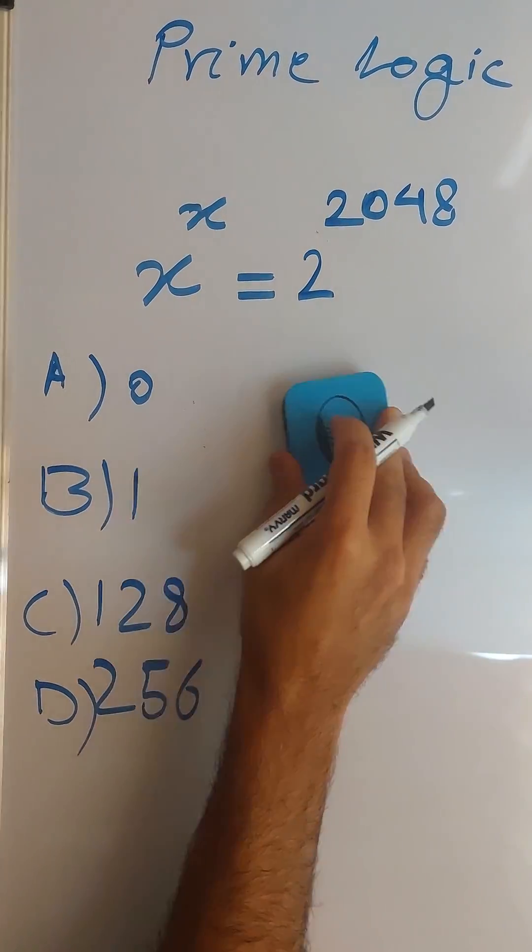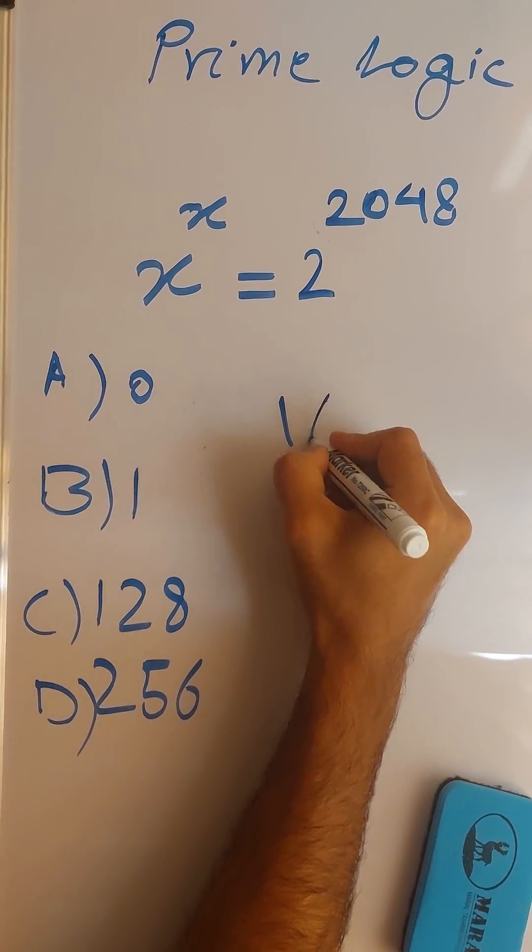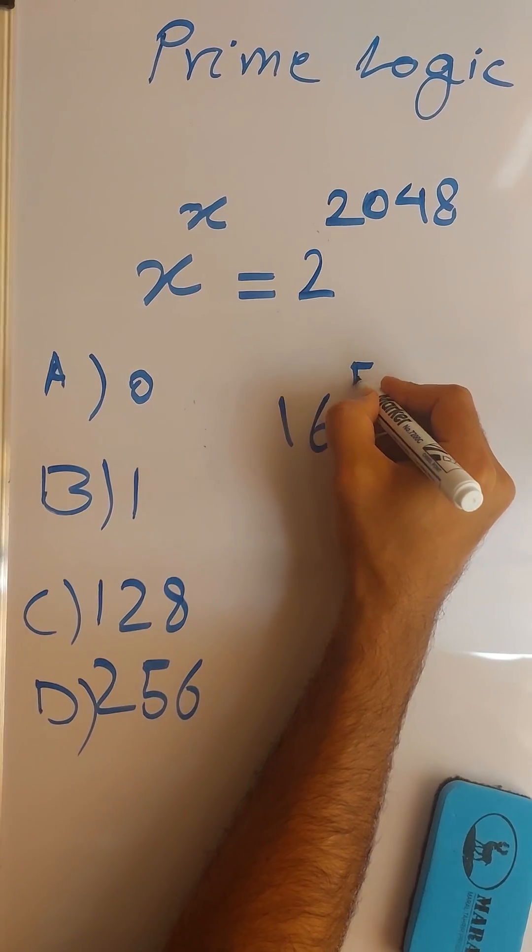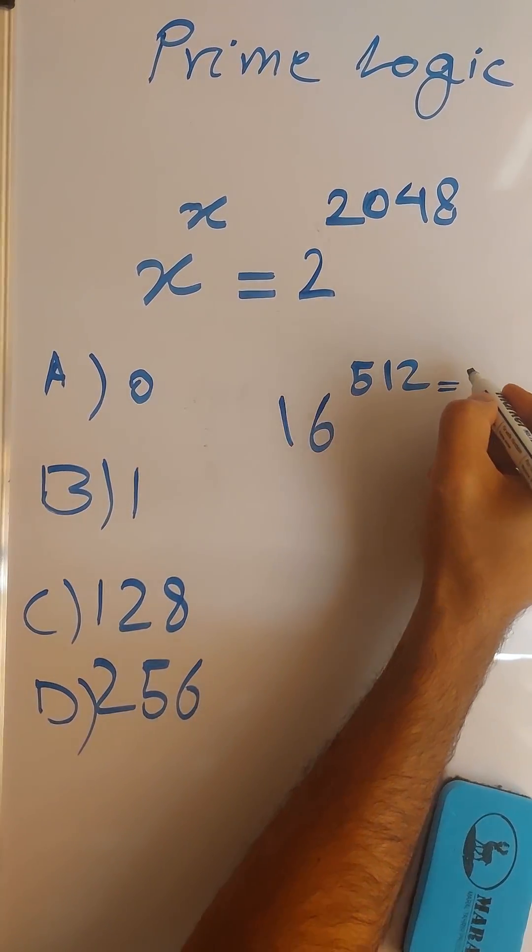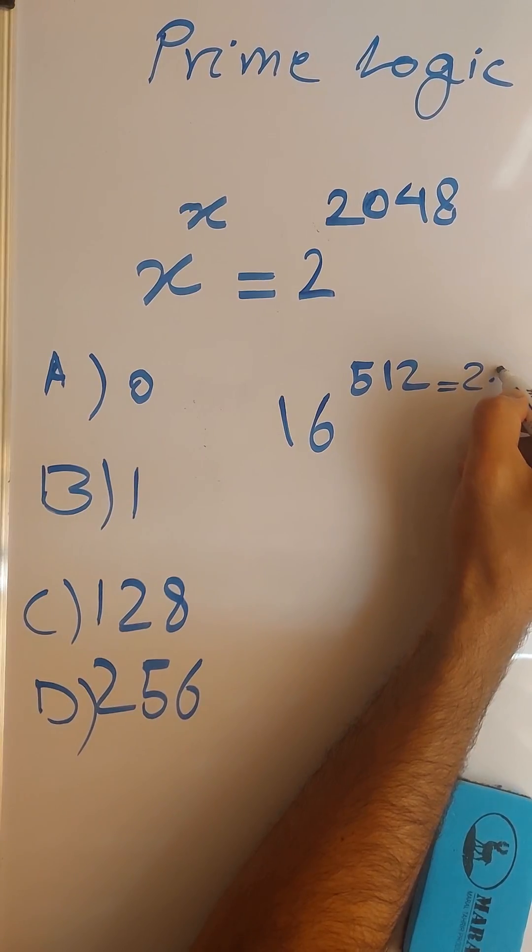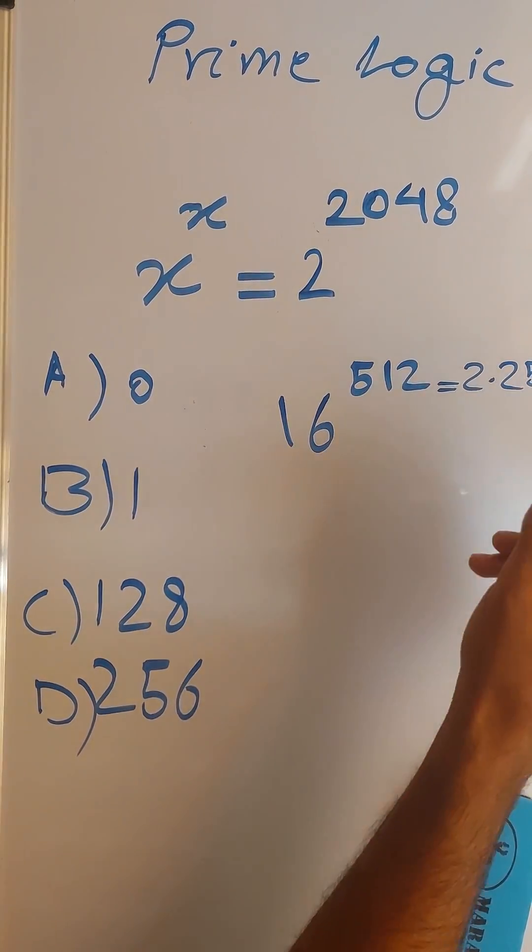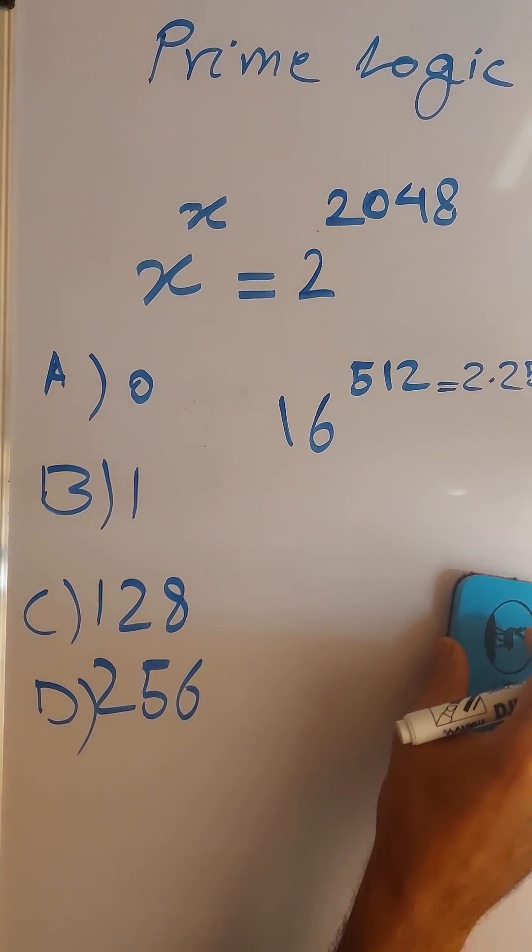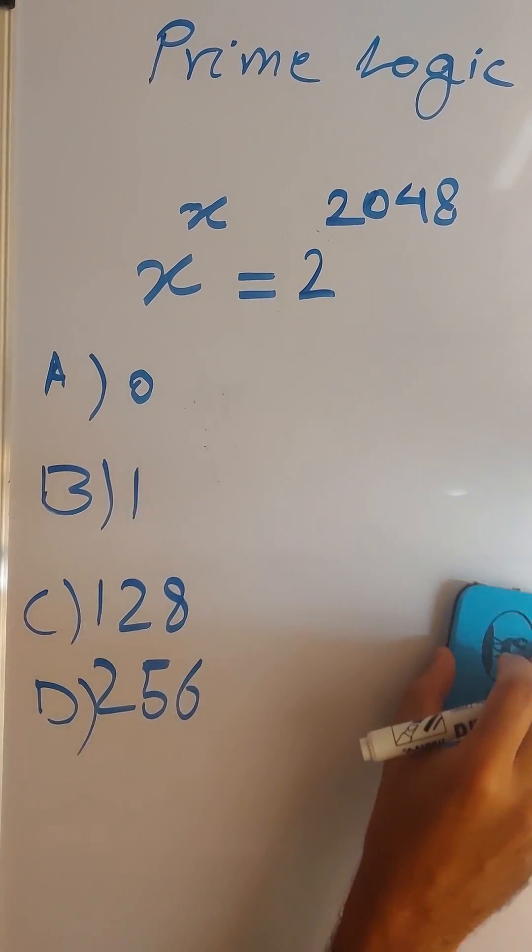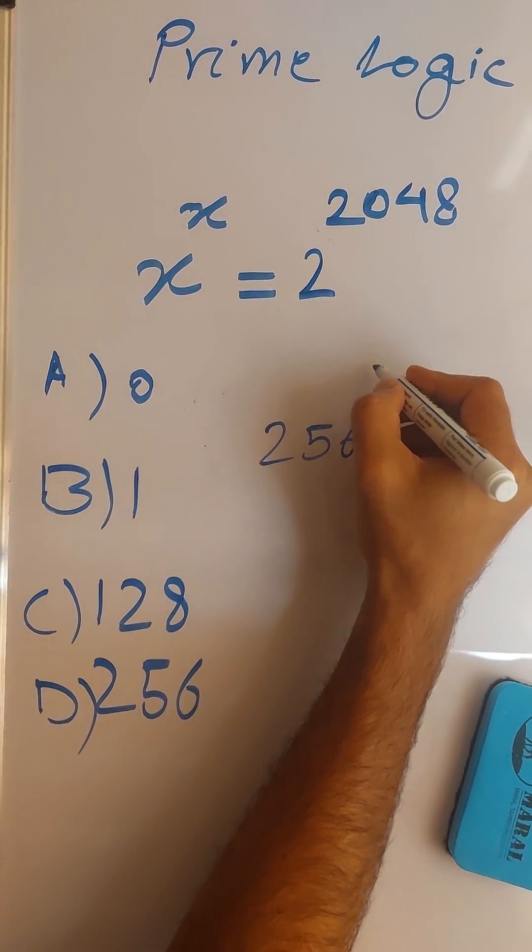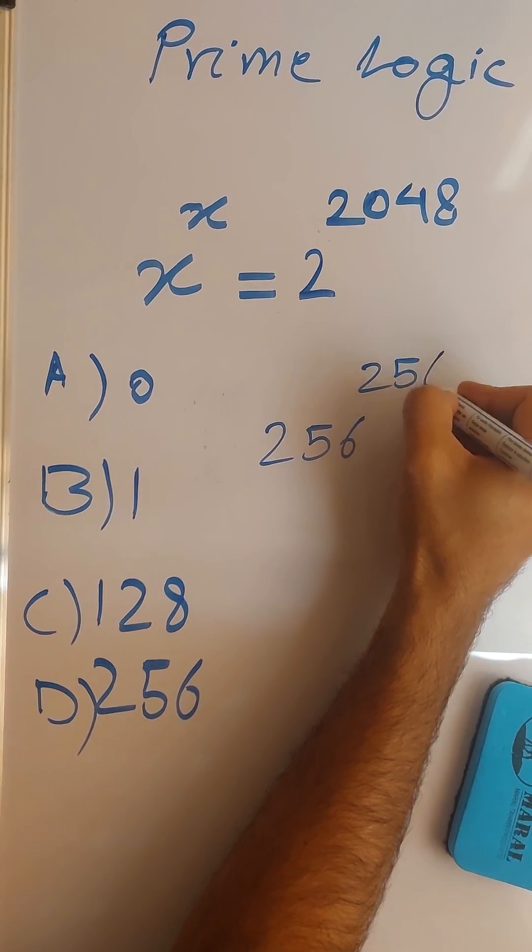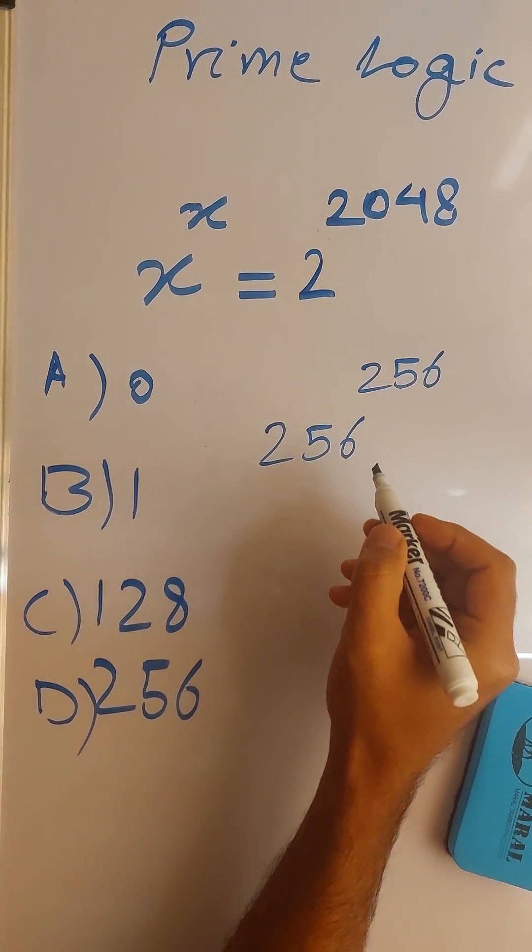We can do that again. So 512 is 2 times 256, so 16 to the power of 2 is 256, giving us 256 to the power of 256.